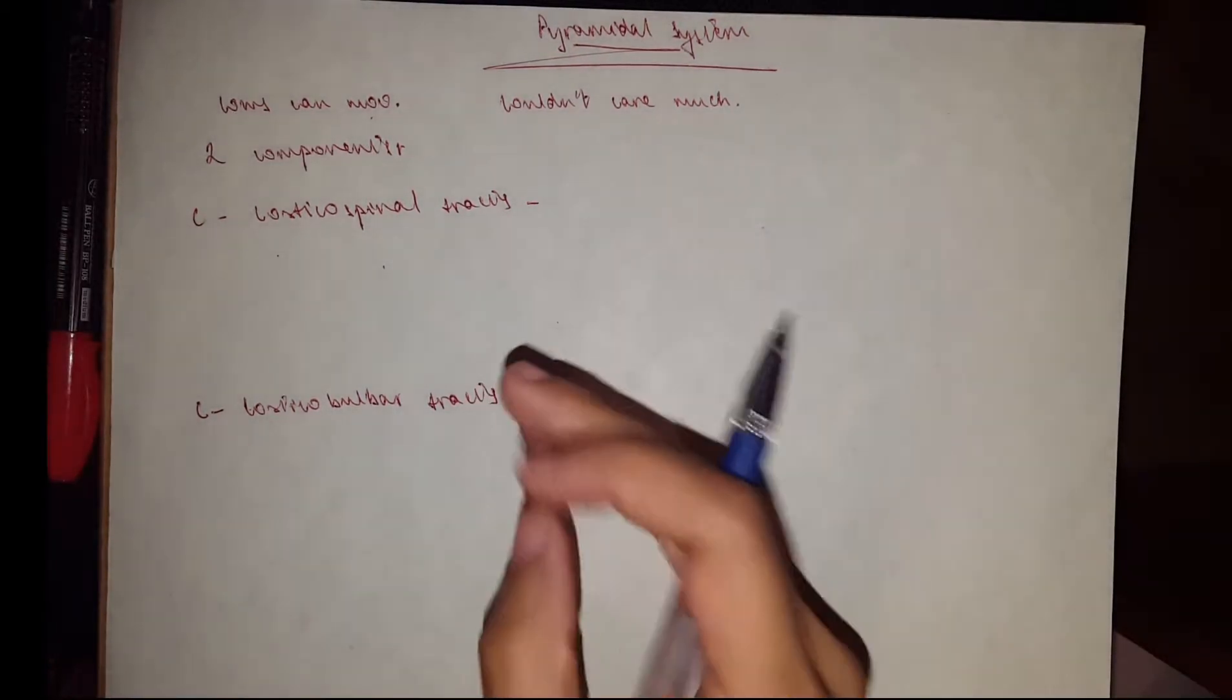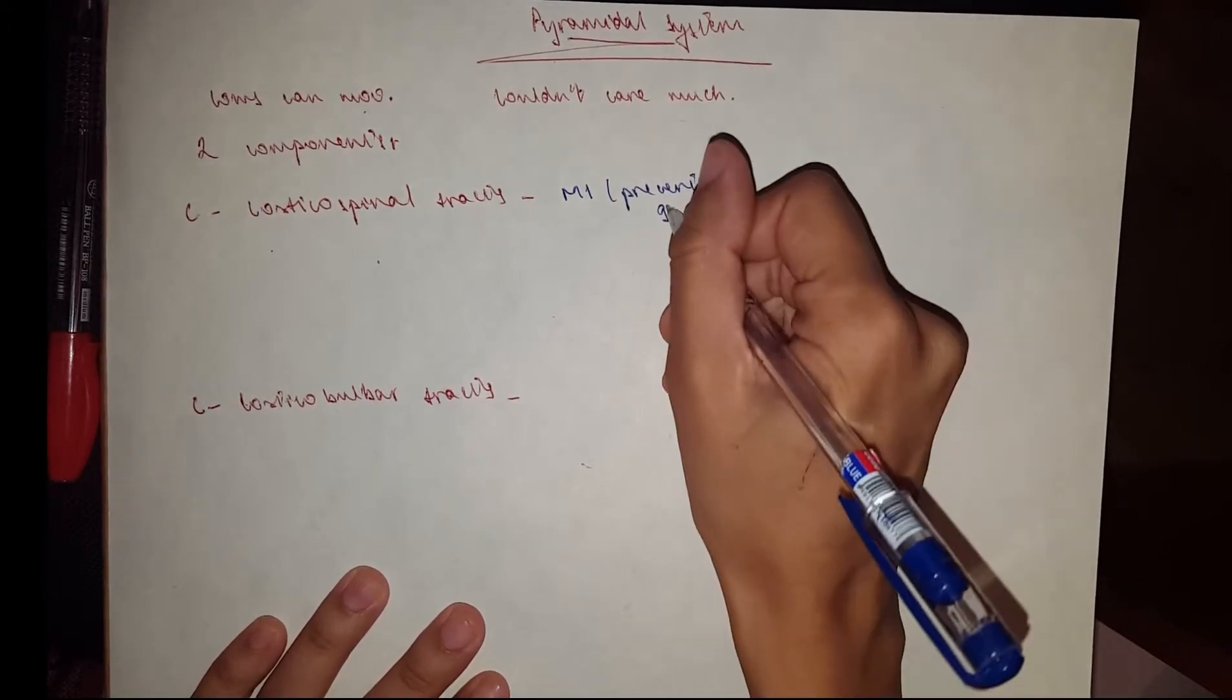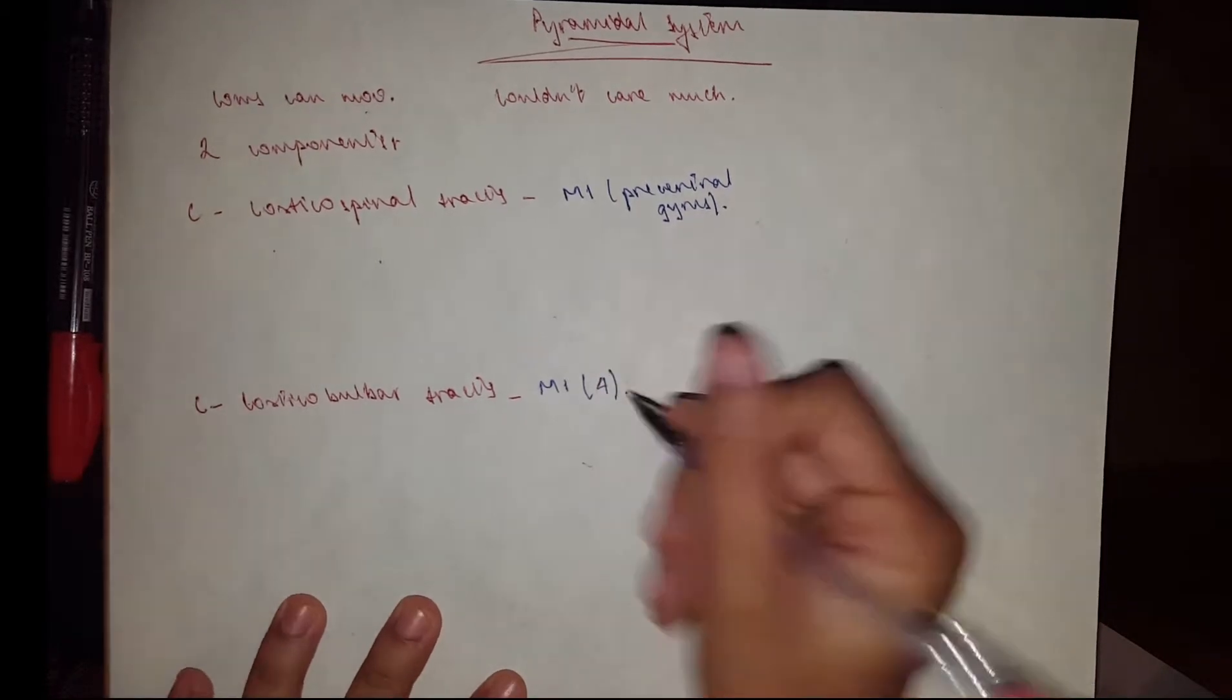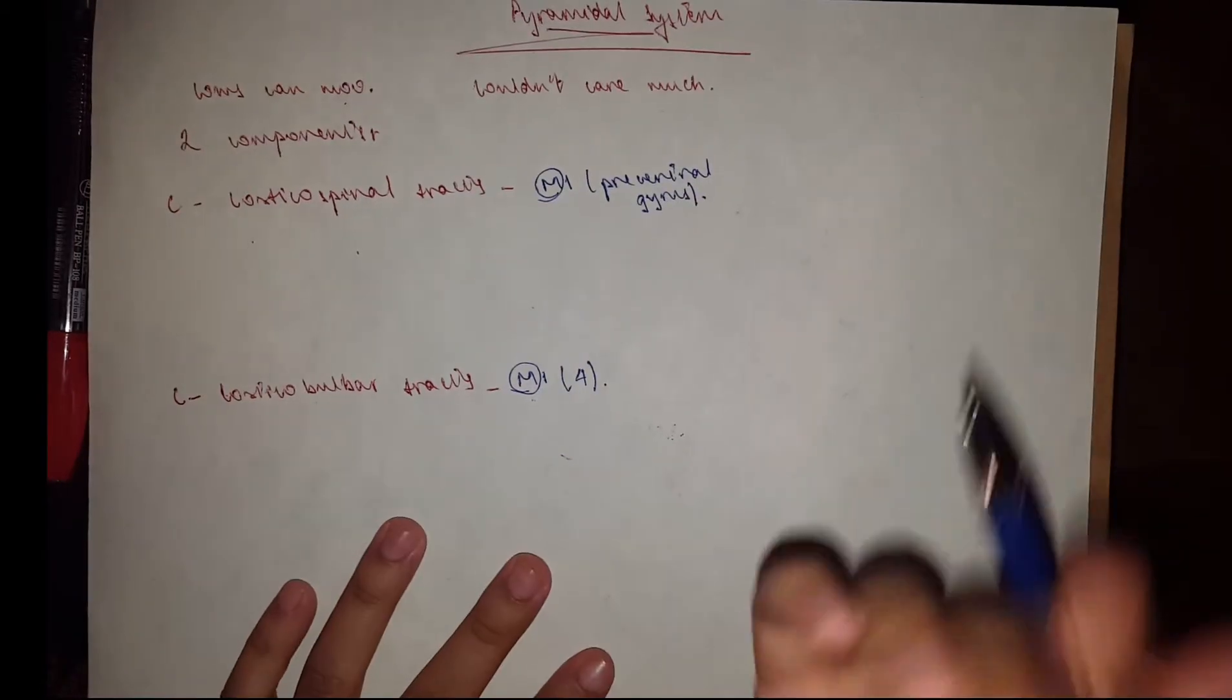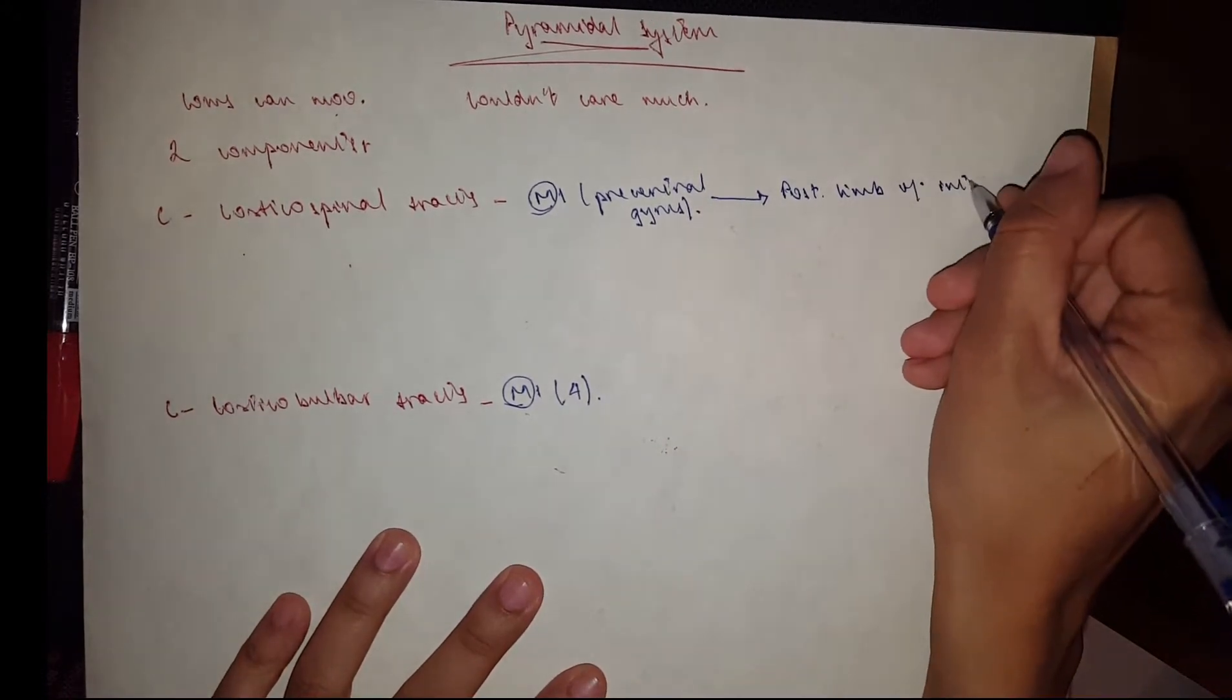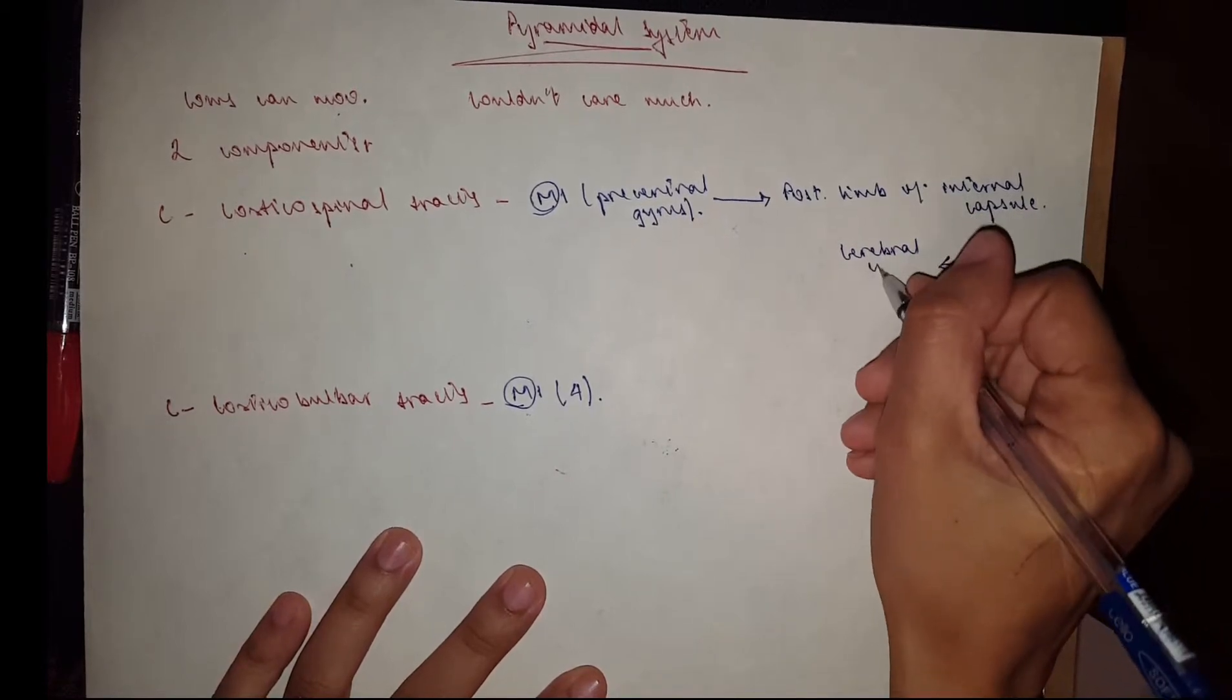Now the corticospinal tract starts—actually, both of them start with M1, and M1, if you know, which you should know, is the precentral gyrus, also Brodmann area number four. So both of them start from M1. That's why I've written 'moo' here, because this is one of the M's. So then from the precentral gyrus it goes to the posterior limb of the internal capsule, and then this tract goes to the midbrain through the cerebral crura of the midbrain.